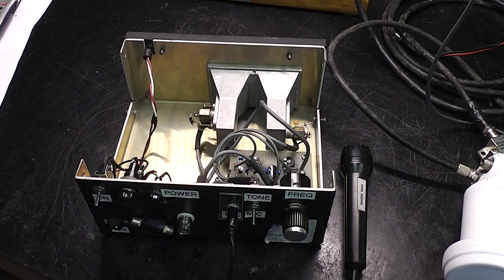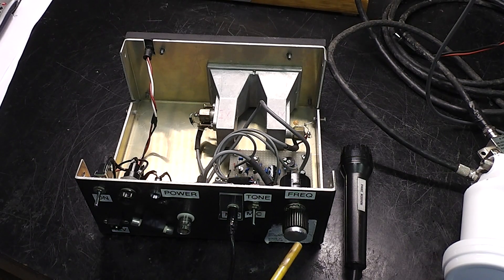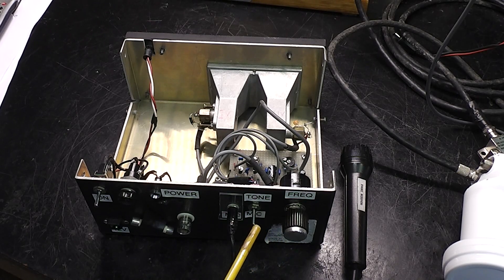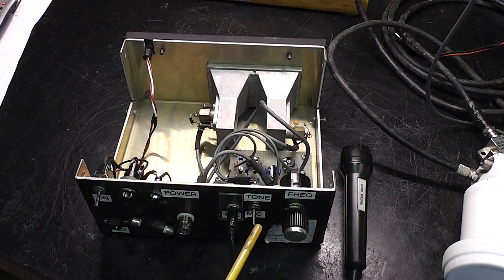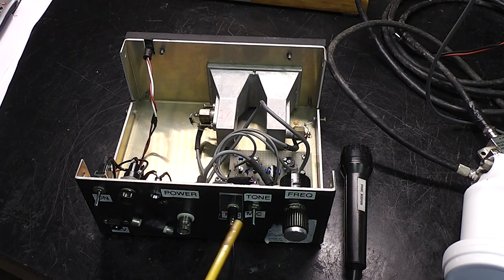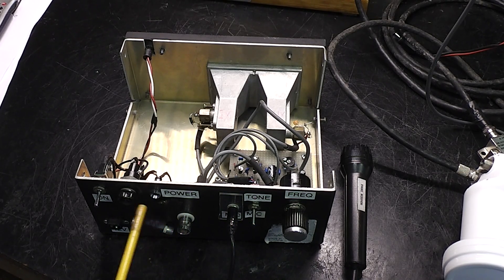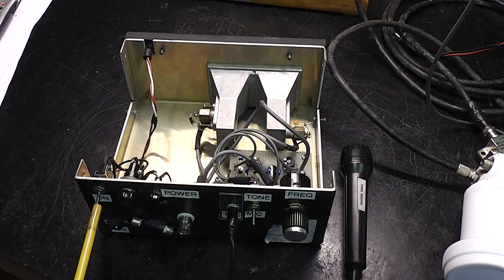Here we can see the gun diode transmitter. As you can see there's a control for frequency, a switch for tone or microphone so you can send out a tone or switch the microphone in. There's just a power indicator and a fuse and an on-off switch.